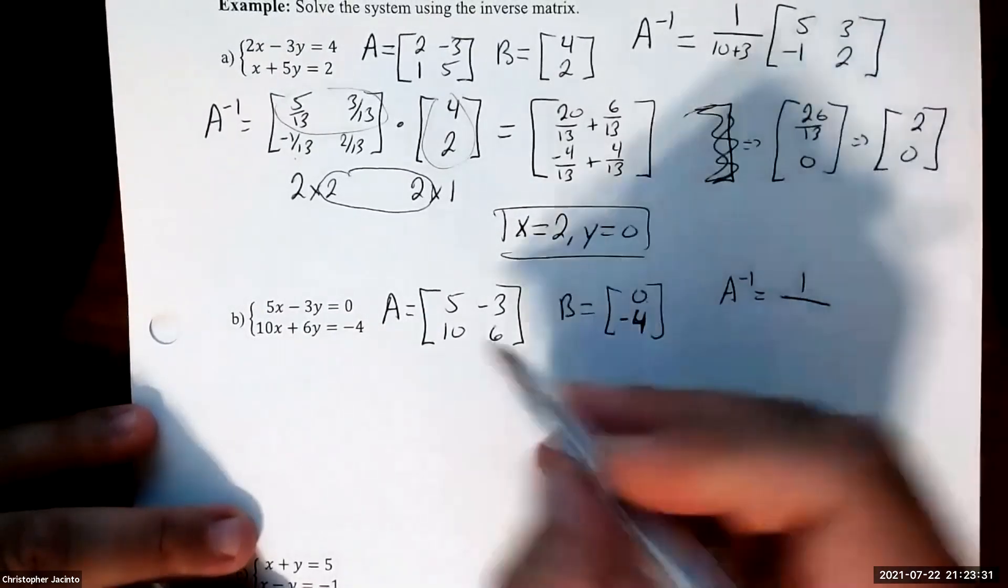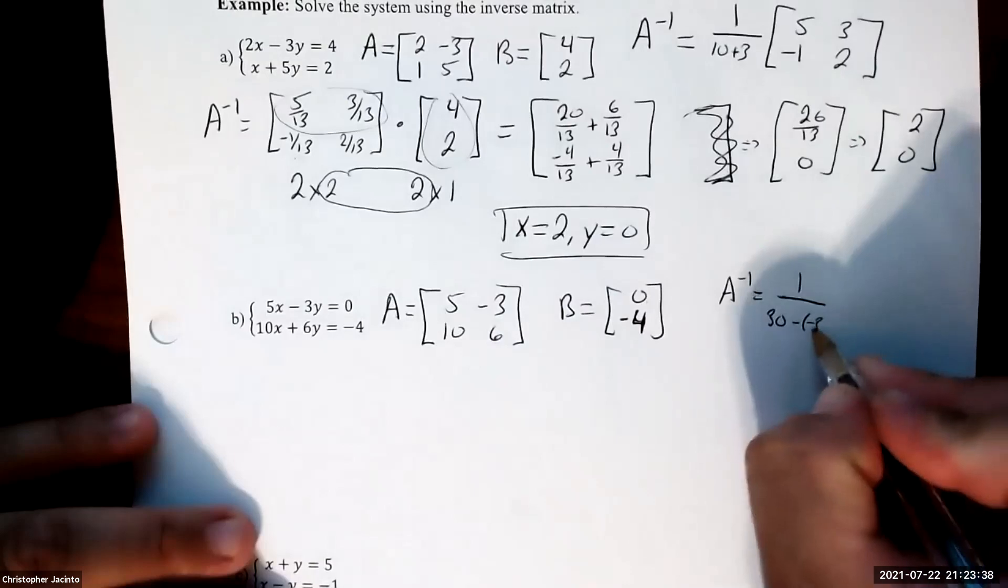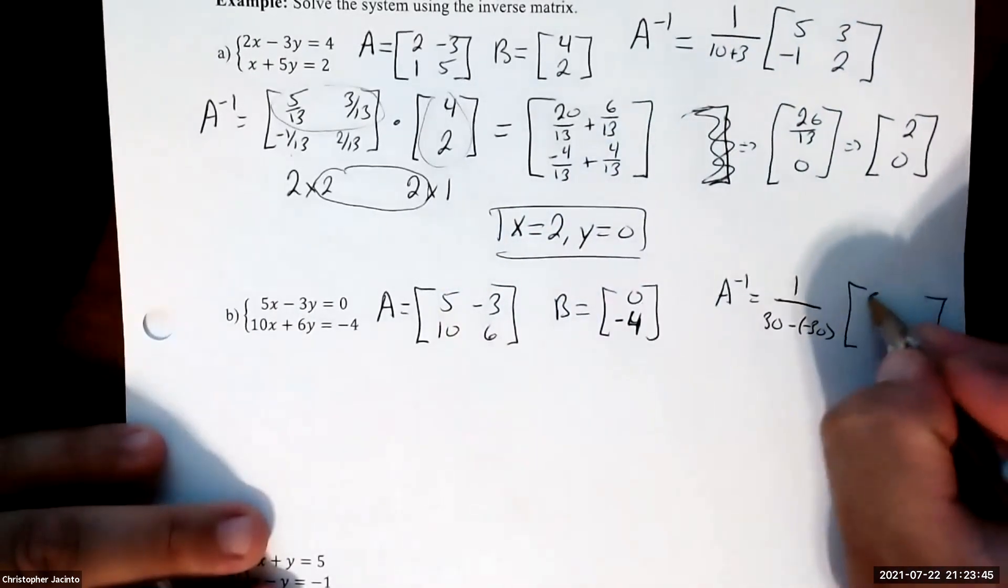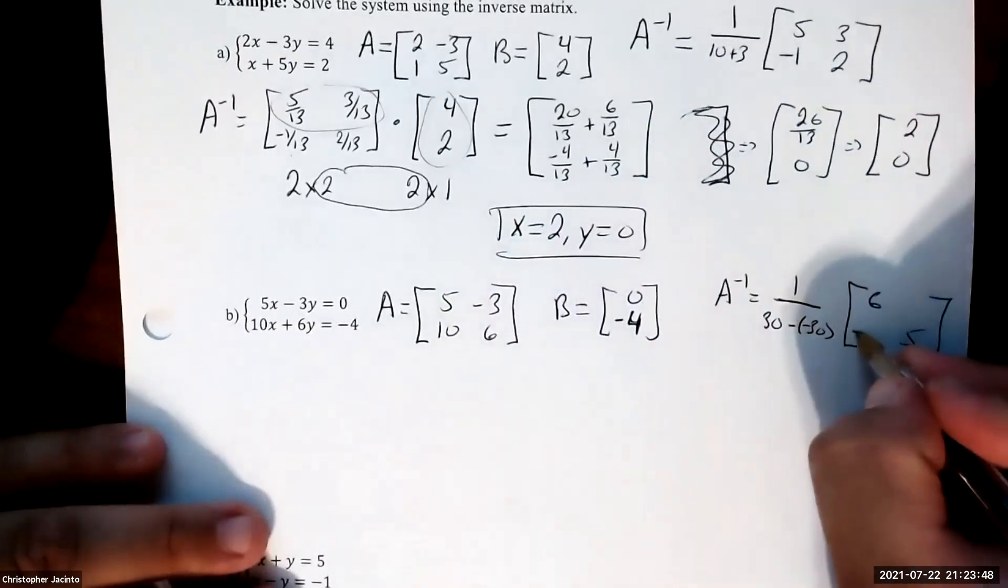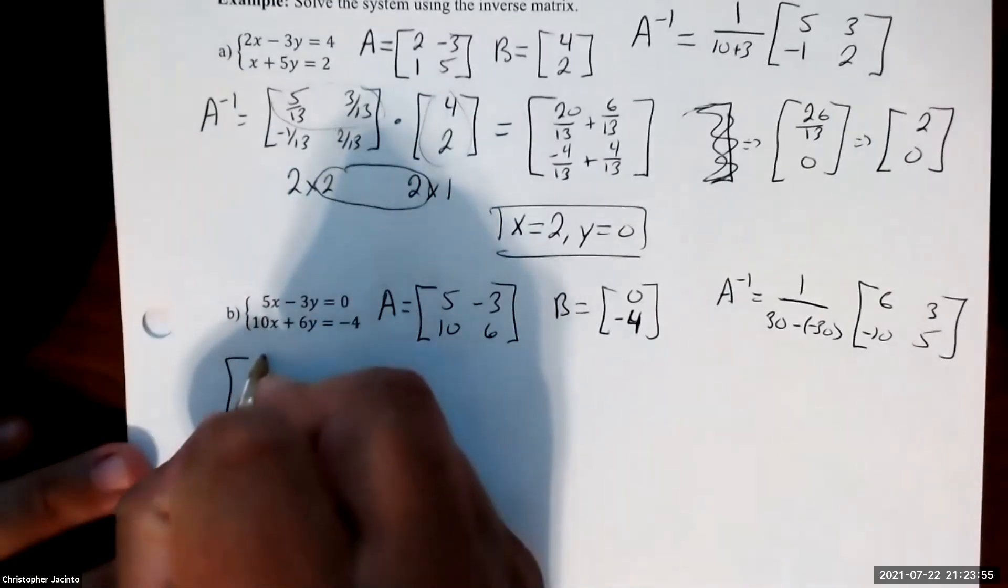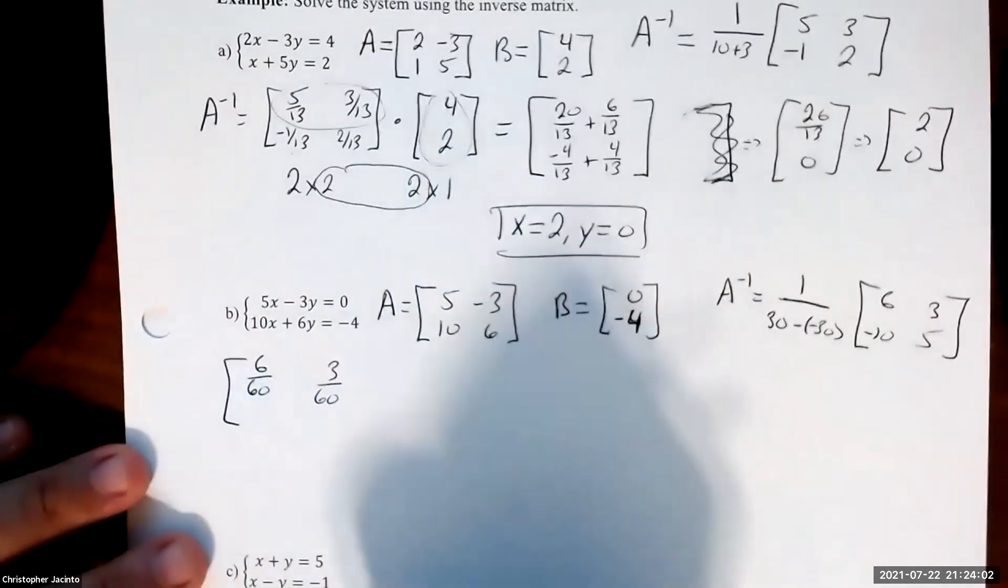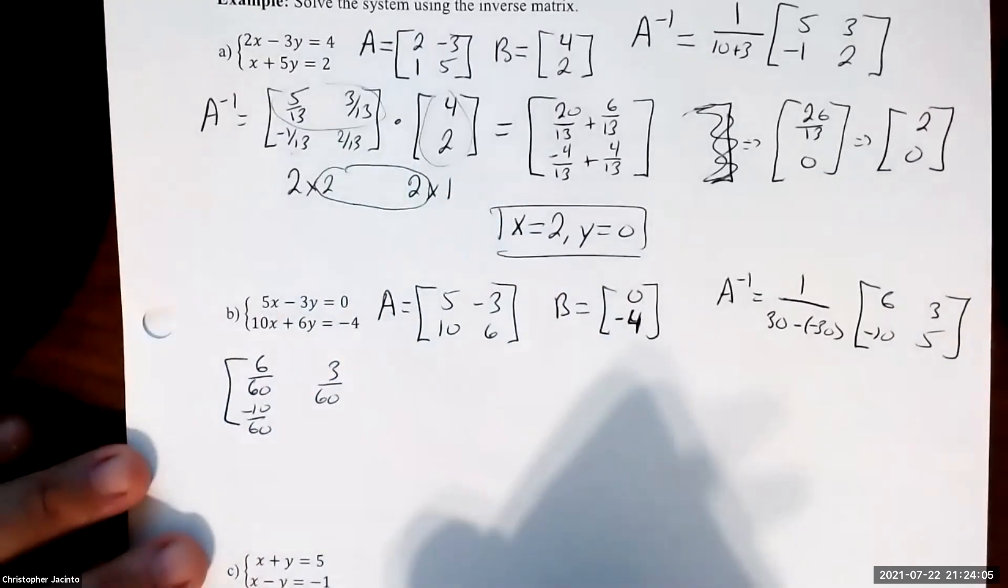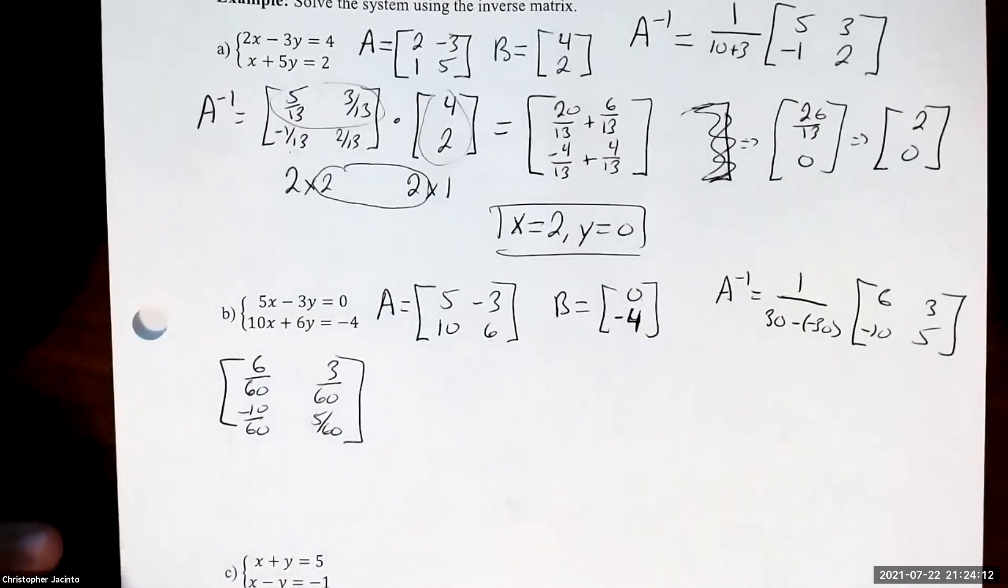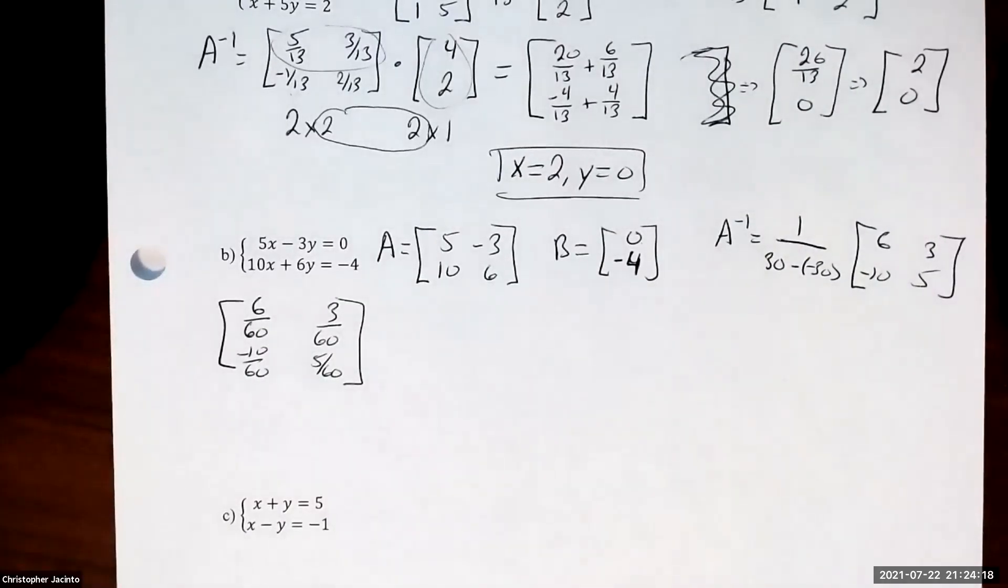A inverse: 1 over the determinant. That's going to be 30 minus negative 30, so that's 60. Then we're going to flip these around, so 6 and 5, and change the signs. So it's going to be 6 over 60, 3 over 60, negative 10 over 60, and 5 over 60. Notice I'm keeping it in fraction form because usually you don't want to simplify and make more work for yourself after you have to multiply them together.